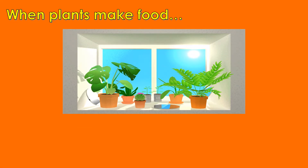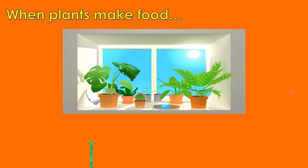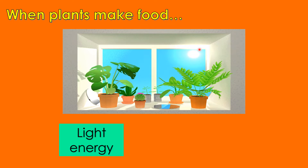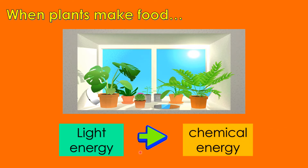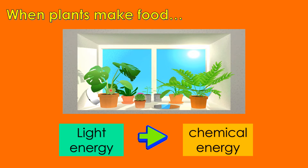What energy transformation takes place when plants make food? First, it's the light energy from the sun. It will transform to chemical energy because the plants will make food.